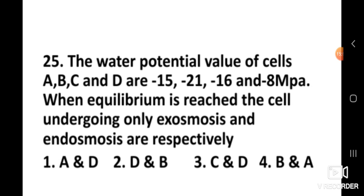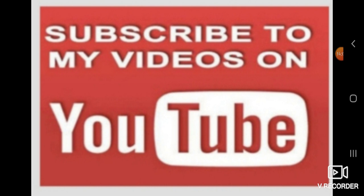Question number twenty-five: The water potential values of cells A, B, C, and D are minus 15, minus 21, minus 16, and minus 8 megapascals. When equilibrium is reached, the cells undergoing only exosmosis and endosmosis respectively are? The right answer is D and B.